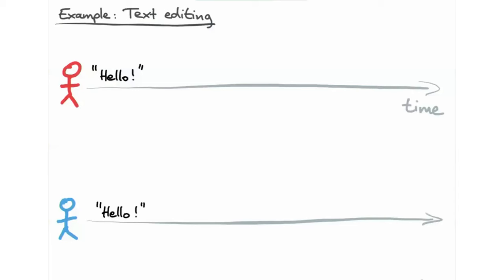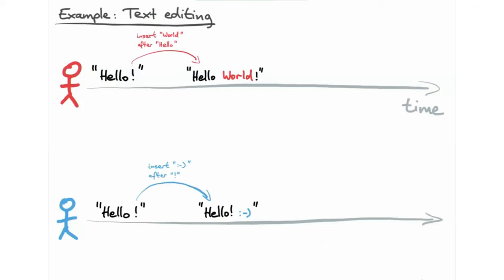This is really the crux of what a collaborative text editor has to do. It needs to allow each user to have a copy of the document on their own local computer and to modify that document without waiting for a network round trip. For example, if the red user types the word 'world' before the exclamation mark, those edits are immediately applied to that user's own copy in their web browser without waiting for a round trip to the server — because if you have to wait on every single keystroke, it would be really painful to use.